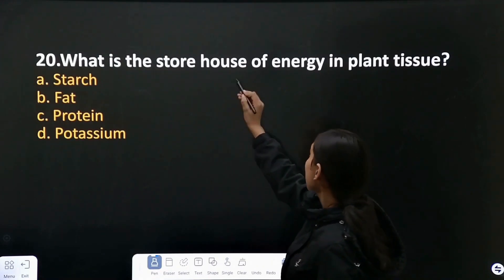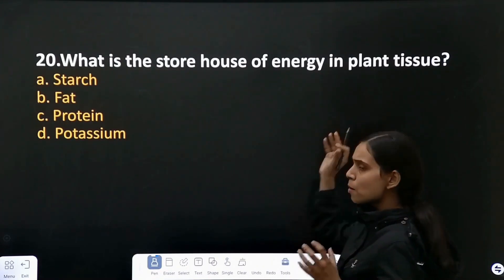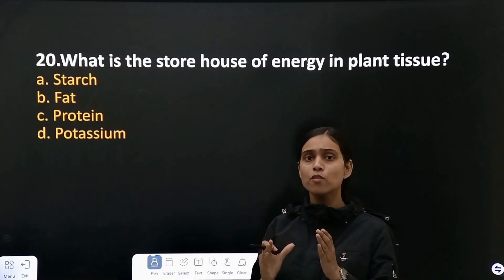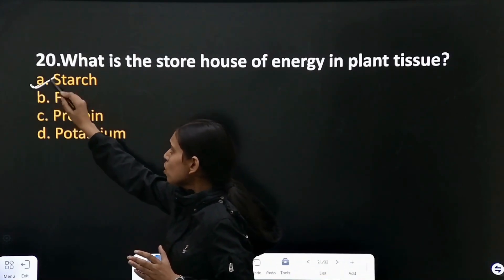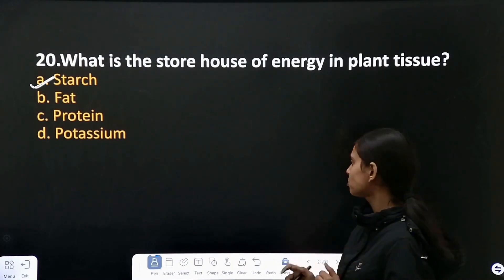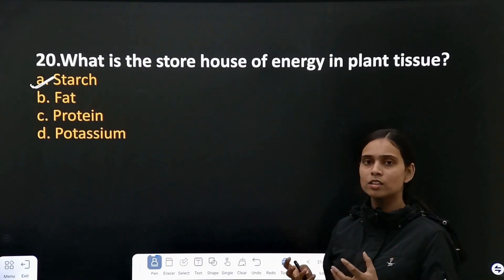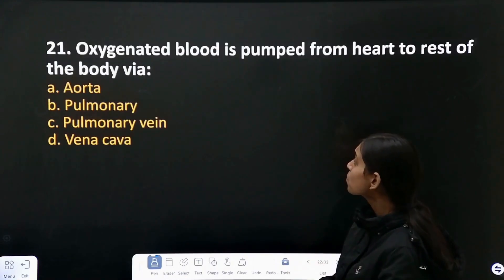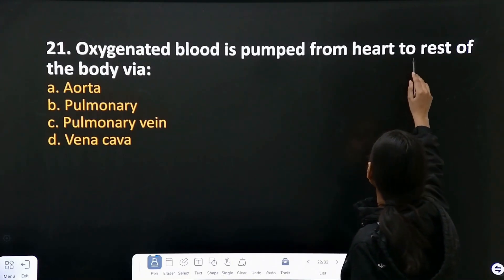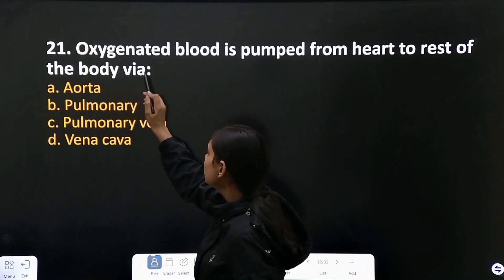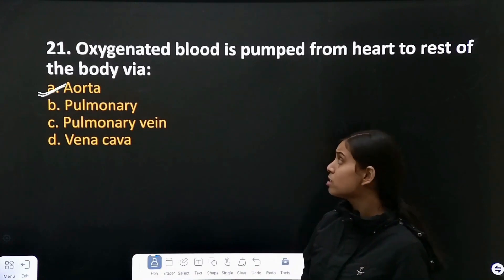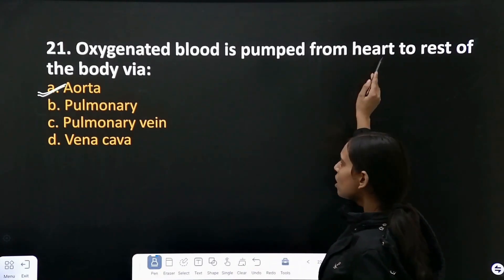Question number 20: what is the storehouse of energy in plant tissue? Plants store sugars and glucose in the form of starch — they store all energy in the form of starch. Whenever they need food, they draw from starch. Question number 21: oxygenated blood is pumped from the heart to the rest of the body via the aorta. This is the correct answer.